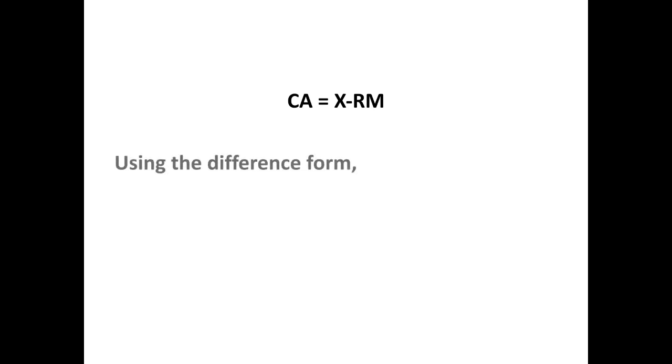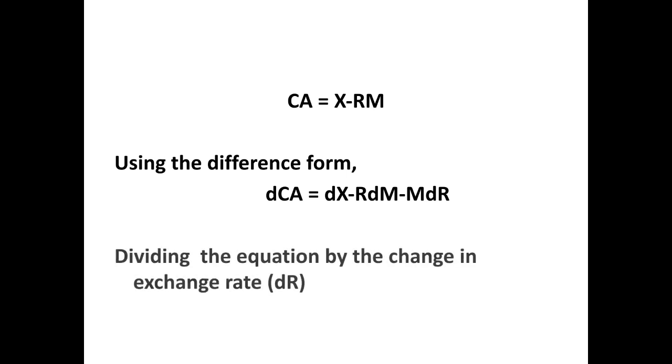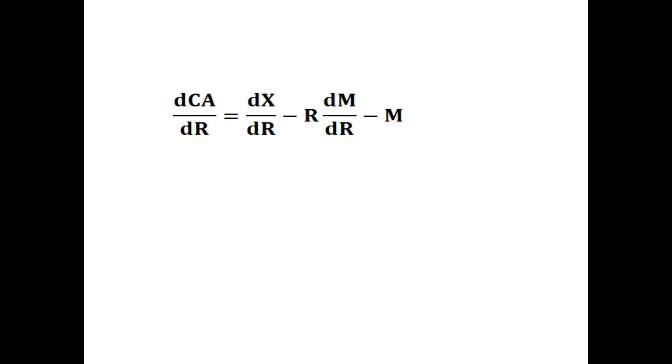By setting the domestic as well as foreign price level to unity, we define the current account as CA = X − RM, where CA is the current account, X is exports, R is the exchange rate, and M is imports. Using the difference form to find changes in the current account, we have dCA = dX − R·dM − M·dR. Dividing this equation by the change in the exchange rate dR, our equation becomes dCA/dR = dX/dR − R·dM/dR − M.